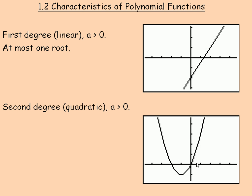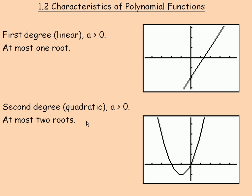On the bottom right-hand corner of the page is the graph of a second degree or quadratic function, a polynomial function — it's also called a parabola. The leading coefficient is greater than zero here, so it opens up, and it can cross the x-axis in at most two places, so it has at most two roots.